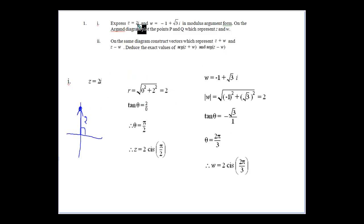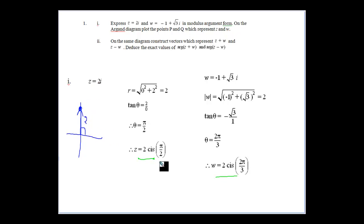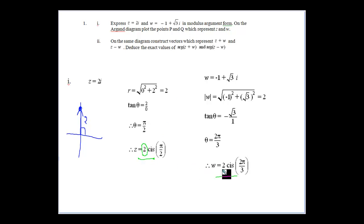We've got to express 2i and W, which is minus 1 plus 3i, in modulus-argument form. We know that modulus-argument form is easier to work with for a lot of these. Then we want to plot the points P and Q which represent Z and W. That's what Z would look like — it's 2i, so it's going to be 90 degrees and just going up 2. Pay a little bit of attention to the idea that you have the same modulus in this question.